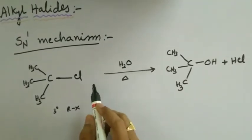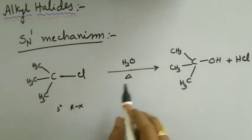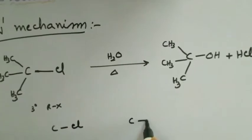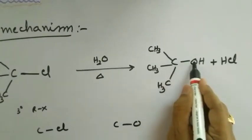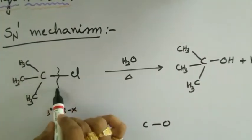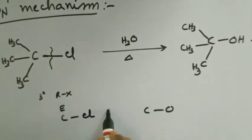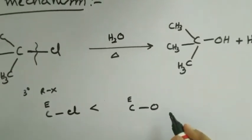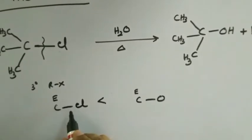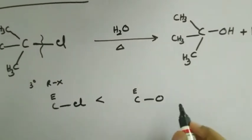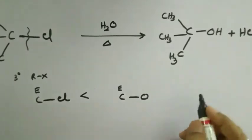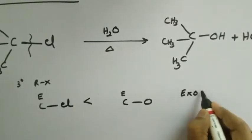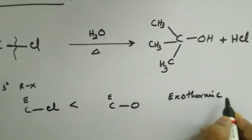In the SN1 mechanism of hydrolysis of tertiary butyl chloride, a C–Cl bond is broken and a C–O bond is formed. The energy of the C–Cl bond is less compared to the energy of the C–O bond. Whenever a chemical bond is formed, energy is released; whenever a bond is ruptured, energy is absorbed. Therefore, the released energy is more than the absorbed energy, and hence these SN1 reactions are exothermic in nature.